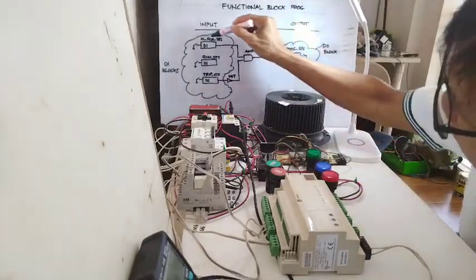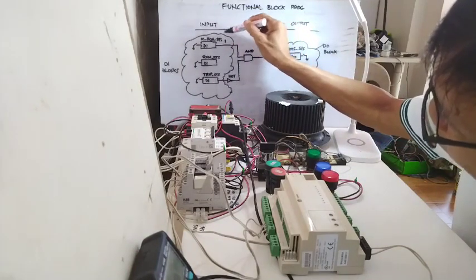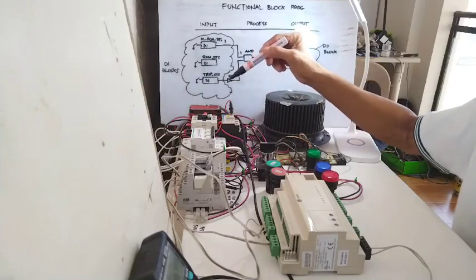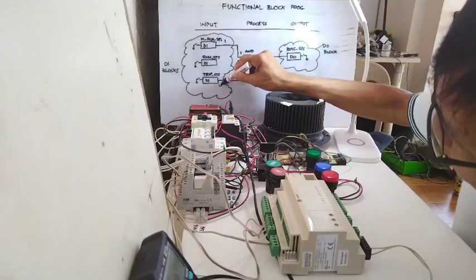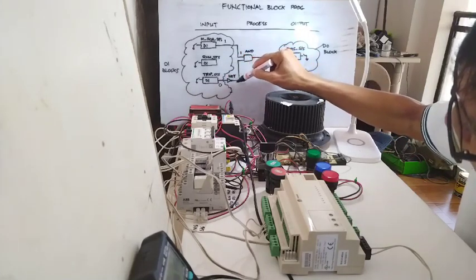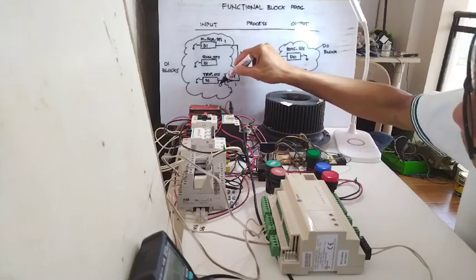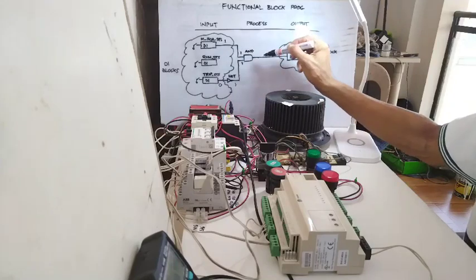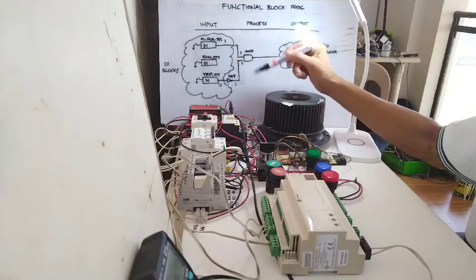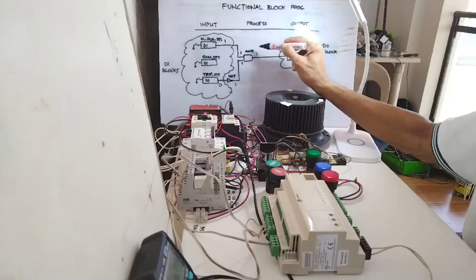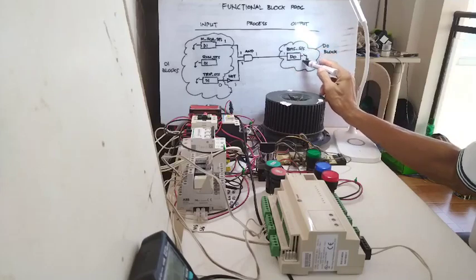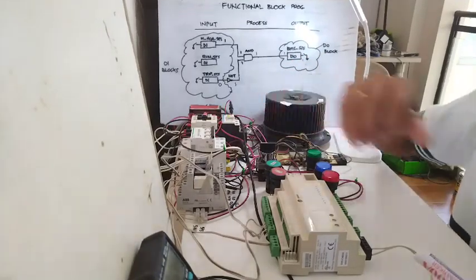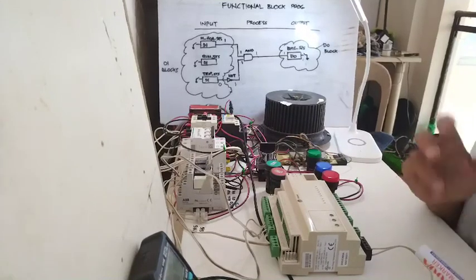Let's trace the signal. Someone puts it in auto, so this input becomes 1. There should be no trip before I can start the motor, so the trip input is 0. It goes to the NOT gate and becomes 1. In the AND gate truth table, both inputs are 1, so the output becomes 1. The contact closes, the signal goes to the control panel, the BMS start/stop provision closes, and the motor starts.